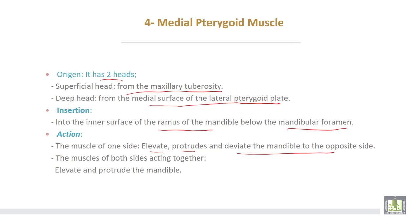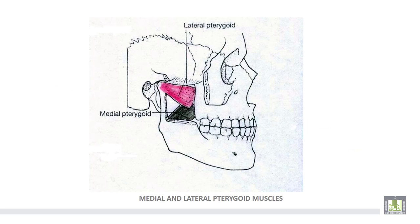When the muscles of both sides act together, they elevate and protrude the mandible. This shows the lateral pterygoid muscle and the medial pterygoid muscle in relation to each other.